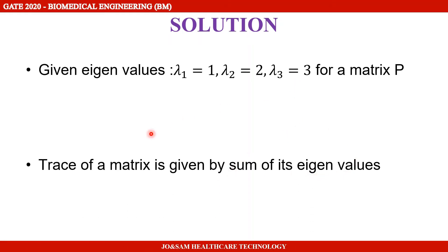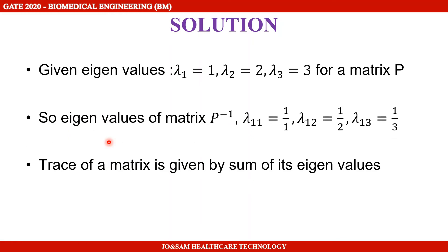The eigenvalues of matrix P inverse are 1 by lambda 1, which is 1 by 1; the second eigenvalue is 1 by lambda 2, which is 1 by 2; and the third eigenvalue is 1 by lambda 3, which is 1 by 3.